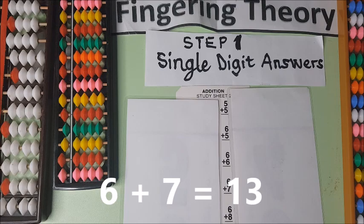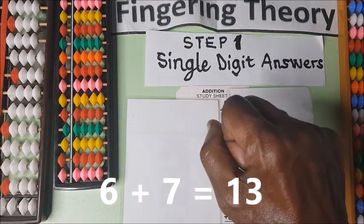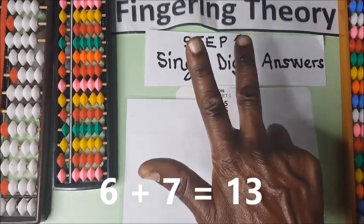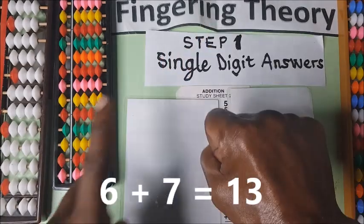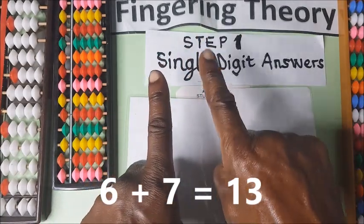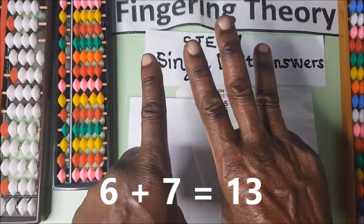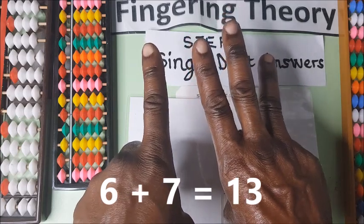We have six plus seven. So go to seven first. Go to seven first. So we have five, five, six, seven. That is seven. Plus six. One, two, three, four, five, six. Plus six is thirteen.